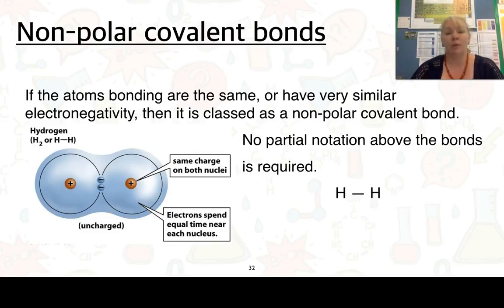Here we're looking at non-polar covalent bonds. This is when we have the same electronegativity, so it's the same atom, or very similar. If that's the case, we class it as non-polar covalent bonds. Here we have an example of hydrogen. We have two hydrogens. They are both going to attract the electrons exactly the same way. You can see here from the diagram that there is no end that is heavier than the other. We end up with the electrons spending equal time around each nucleus, and so we end up with a bond that just looks like this, H bonding to H. As you can see, there is no partial positives or partial negatives required.